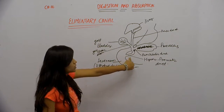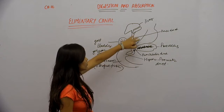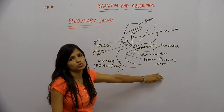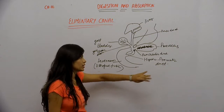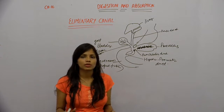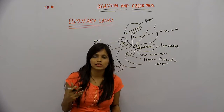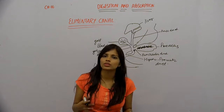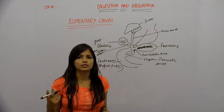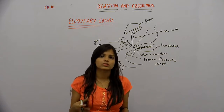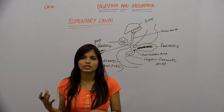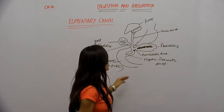The hepato-pancreatic duct receives bile from the liver, gallbladder, and the pancreas. The juices and enzymes in the hepato-pancreatic duct are mixed with the food coming from the stomach. The food coming from the stomach is acidic, as HCl is present in the stomach. As these enzymes and juices get added into the food, it becomes basic — this is essential because a basic environment is required for the enzymes to get activated.